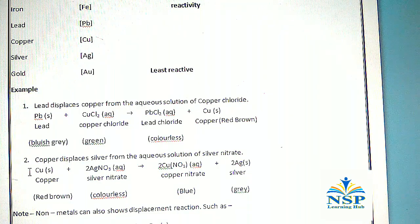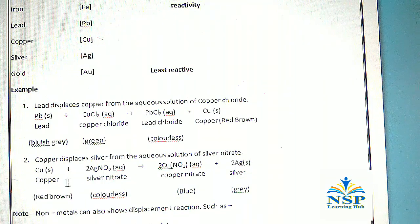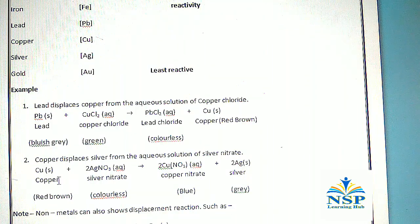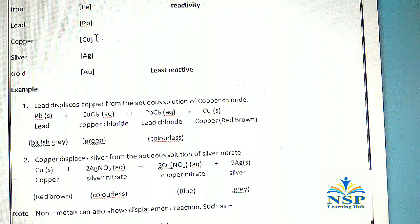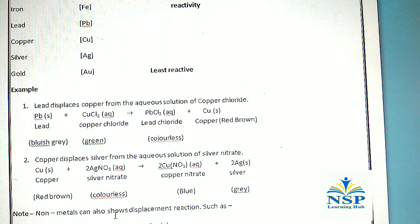In example 2, copper displaces silver from the aqueous solution of silver nitrate: Cu + 2AgNO₃ → Cu(NO₃)₂ + 2Ag. Copper displaces silver because copper is higher in the reactivity series than silver. Note: non-metals can also show displacement reactions.